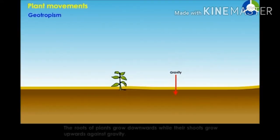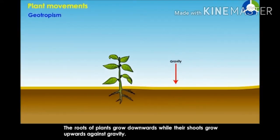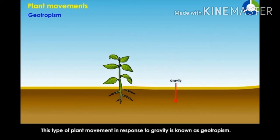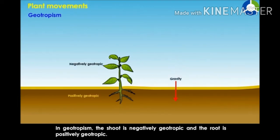The roots of plants grow downwards while the shoots grow upwards against gravity. This type of plant movement in response to gravity is known as geotropism. In geotropism, the shoot is negatively geotropic and the root is positively geotropic.